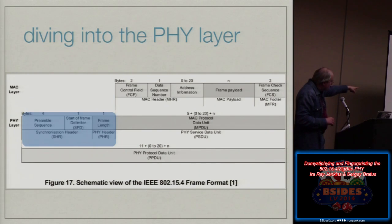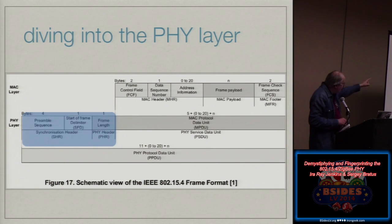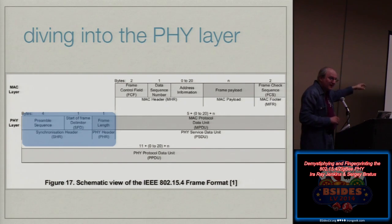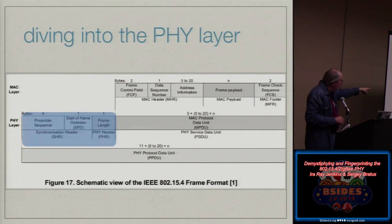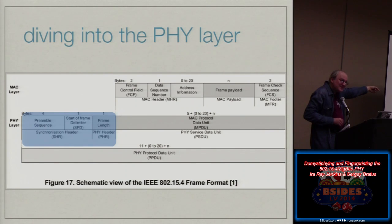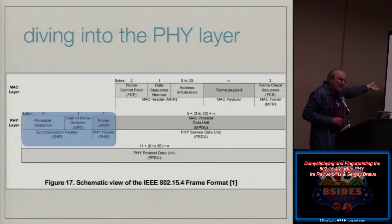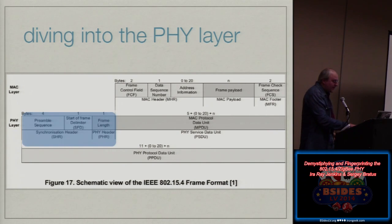What we could do is vary the size of the preamble, vary the start of frame delimiter, and vary the length. If I send you a longer length than the existing body, the noise in the air will be picked up as the remaining bytes — this is a very poor man's sniffer. We call this the packet-out-of-packet trick.